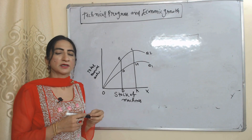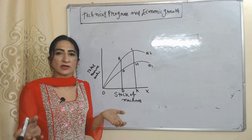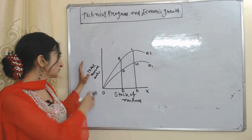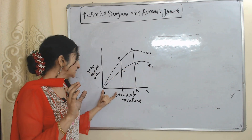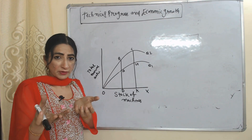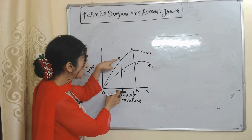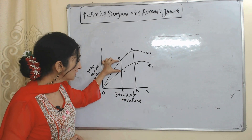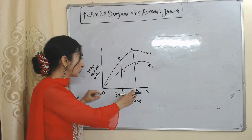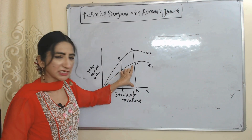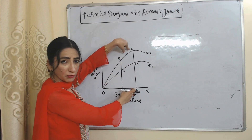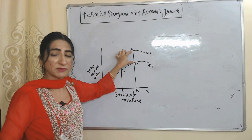Now we will see technological progress and economic development. According to Mead, technological development is very important for economic growth. On the X-axis we have stock of machinery (capital) and on the Y-axis we have total annual output. With production curves Q1 and Q2: OD amount of capital gives AD output without technological progress, but with technological progress the same OD capital gives BD output — an extra AB output solely due to technology. Similarly, OK capital gives GK output without progress, but CK output with progress — the additional CG output is entirely due to technological progress.